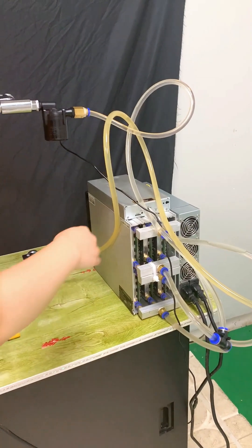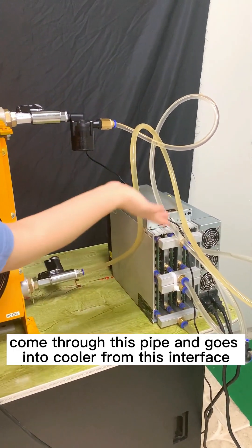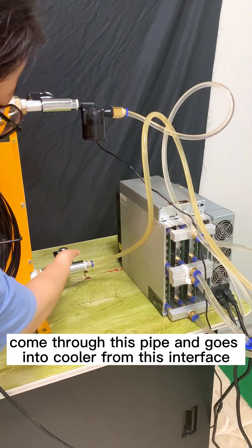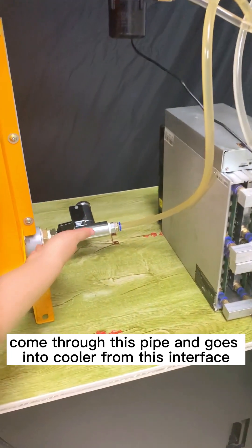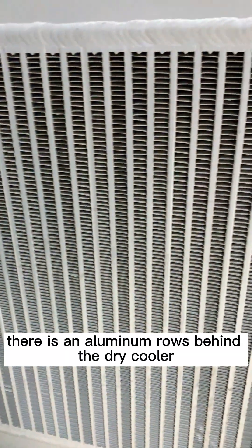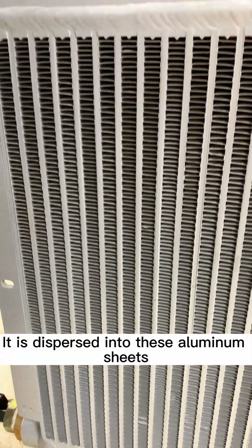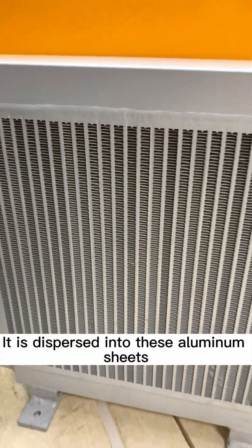The hot water will come through this pipe and get in from this interface. There are aluminum rows behind the dry cooler. After water comes in from this interface, it is dispersed into this aluminum shape.